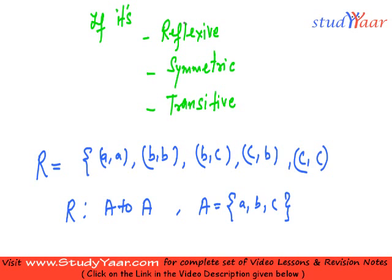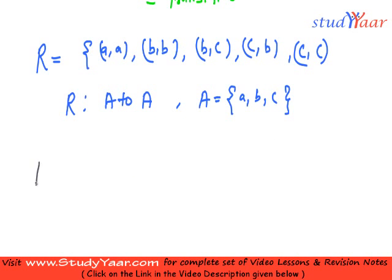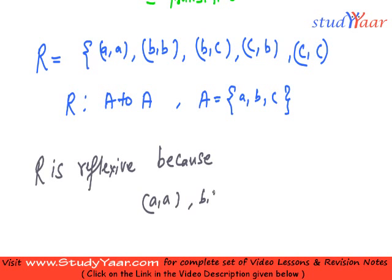So for that first we are going to check out if it is reflexive. I say that R is reflexive because it has all (a,a), (b,b) and (c,c) present. You have (a,a), (b,b) and (c,c) are present.